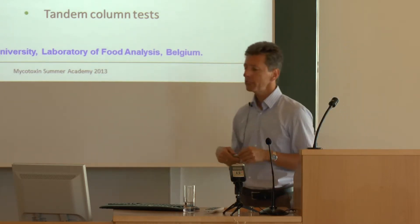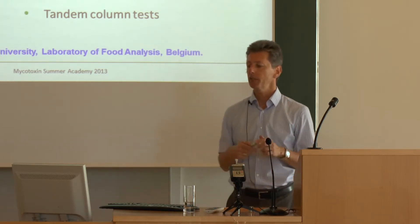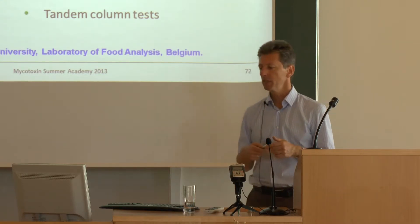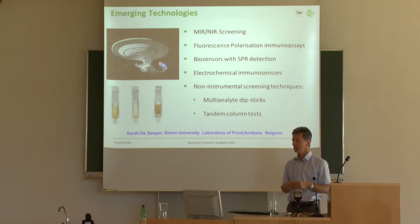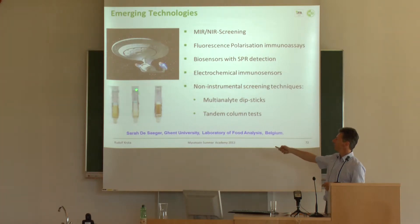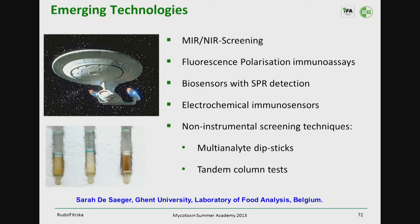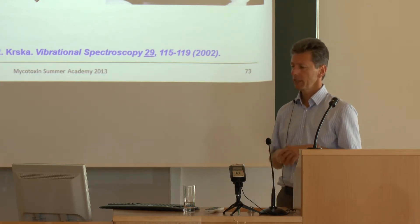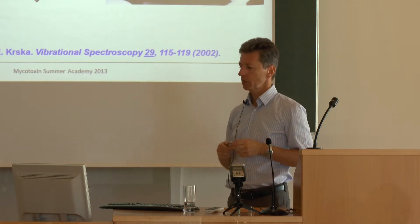Last but not least, there are so-called emerging technologies like mid and near infrared screening, fluorescence polarization, biosensors with surface plasmon resonance (SPR), electrochemical immunoassays, and non-instrumental screening techniques with columns — for instance, a flow-through column where you trap the analyte of interest in a certain zone, then place it in a photometer to measure the mycotoxin. This is a combination of a solid-phase extraction column with a detection device, which is one of these emerging methods.